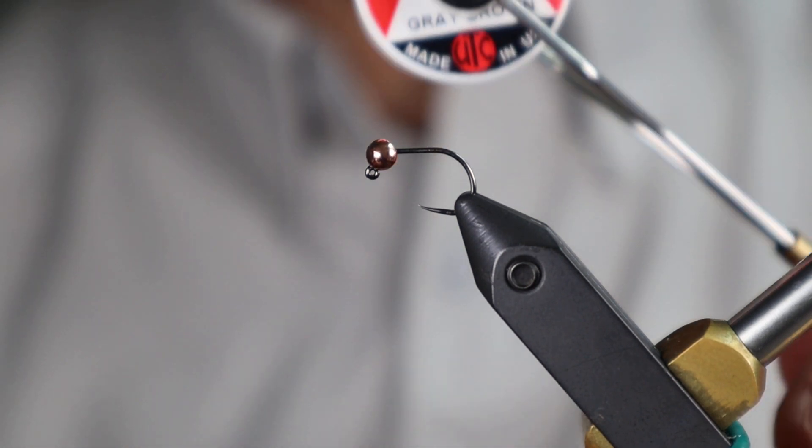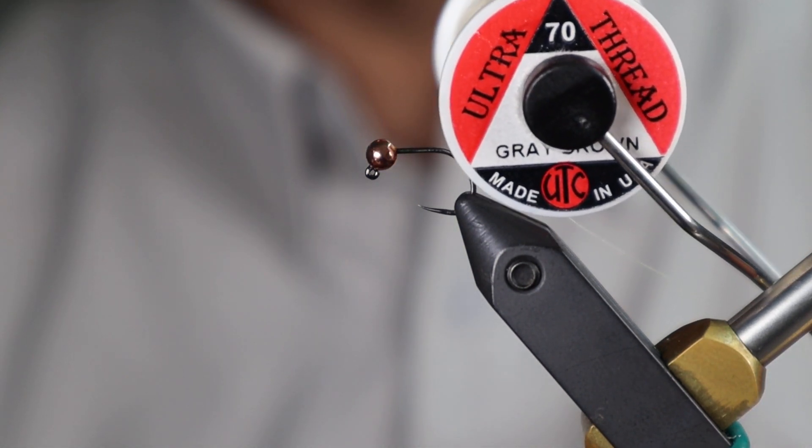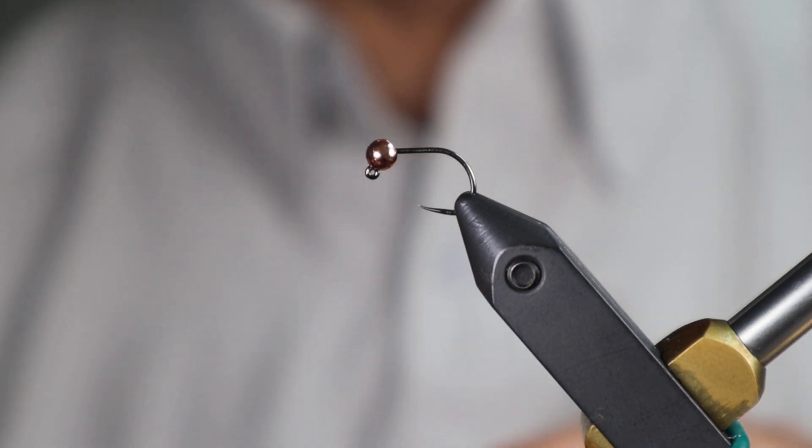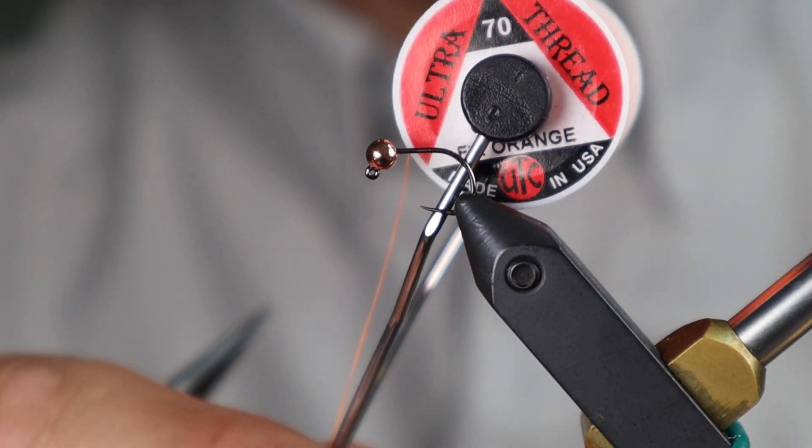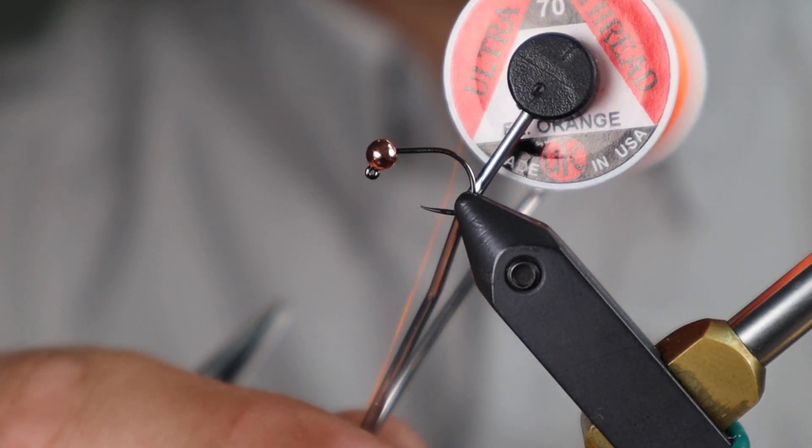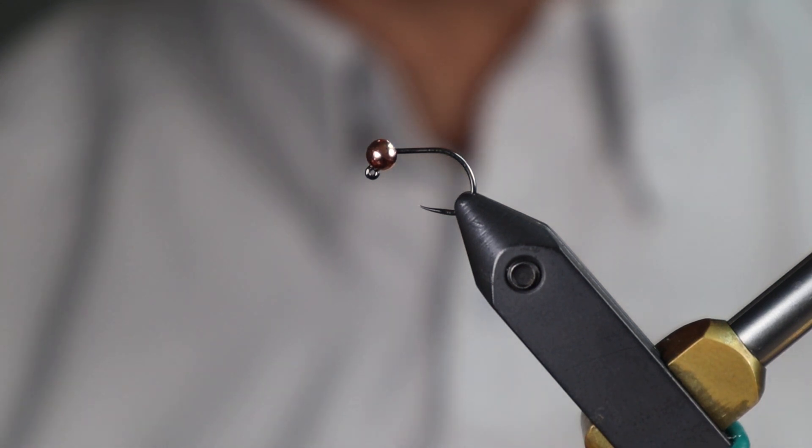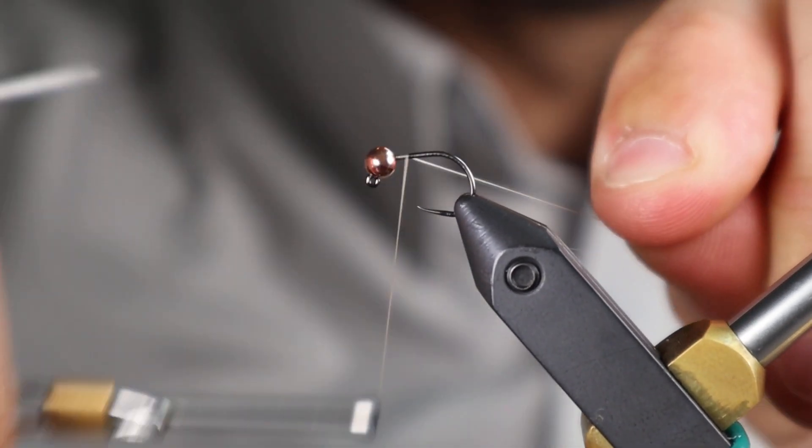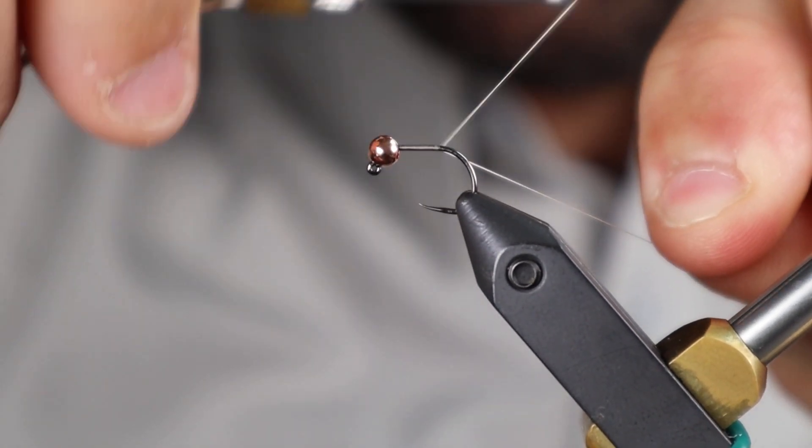For thread, I'm using UTC 70 in gray brown. Any tan thread is going to be fine—tan, even light brown, even black. You're not going to see much of the thread in the end. Another easy variation: just use bright orange thread and leave a little hot spot at the front where you finish the thread. Very quick, easy thing. You buy one spool of thread, same materials, you have a completely different fly useful in different situations.